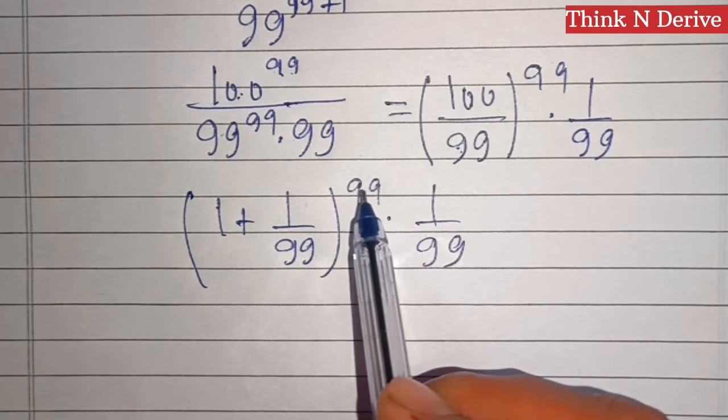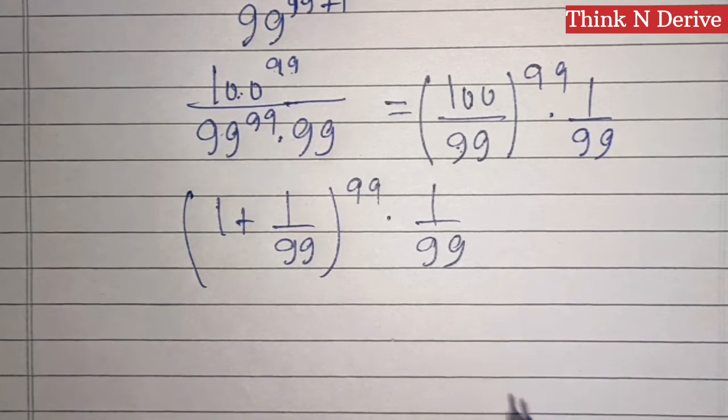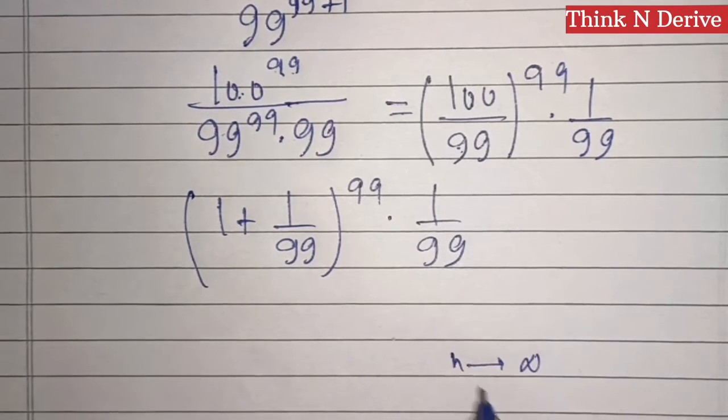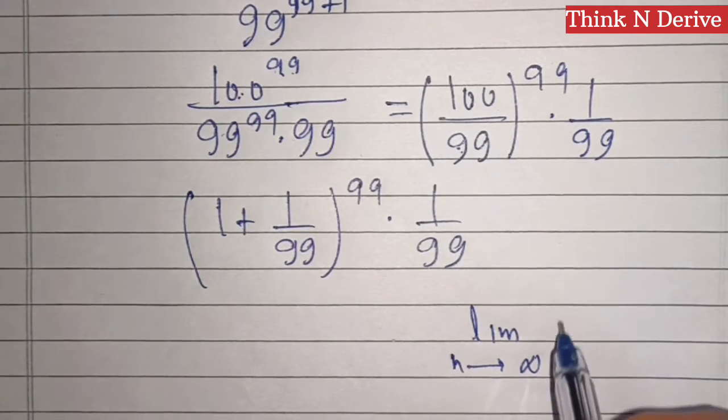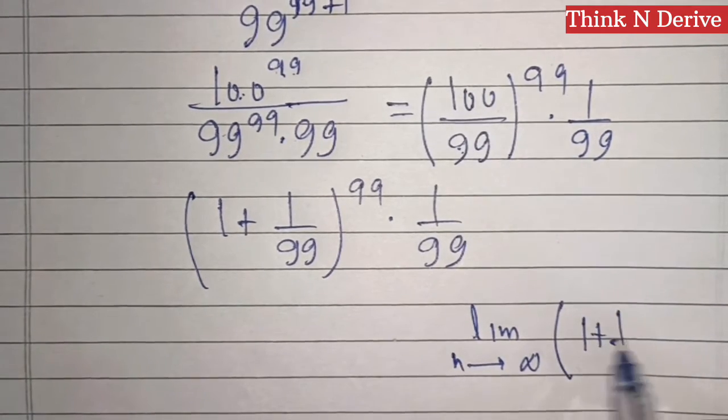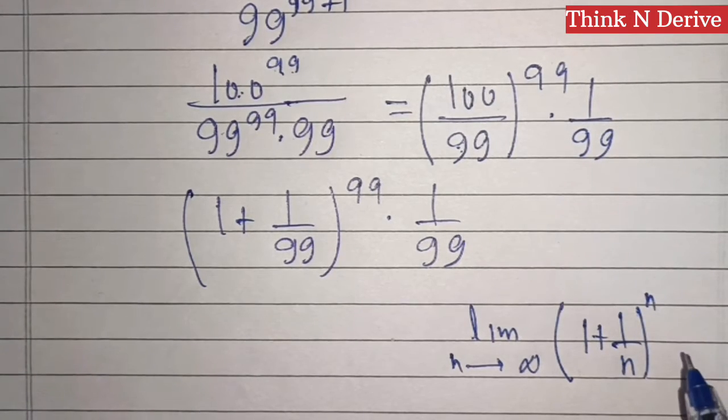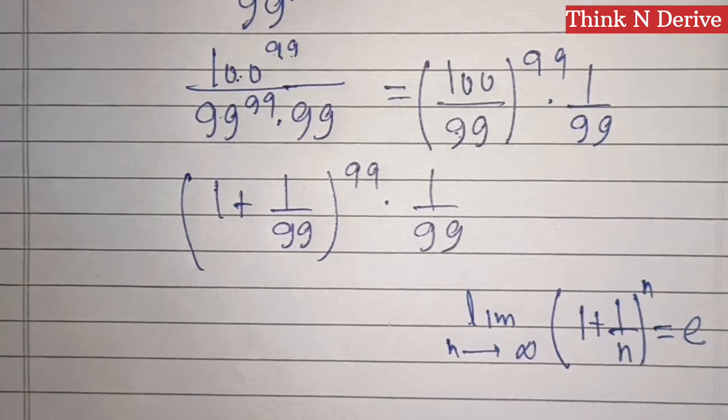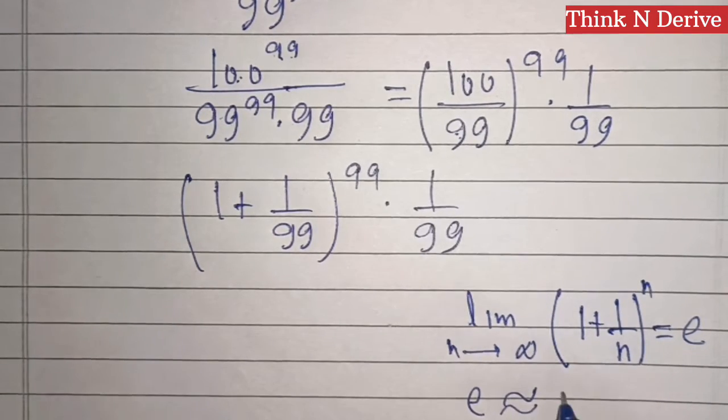The formula is: limit as n tends to infinity of (1 + 1/n)^n equals e, and this e is approximately equal to 2.718.